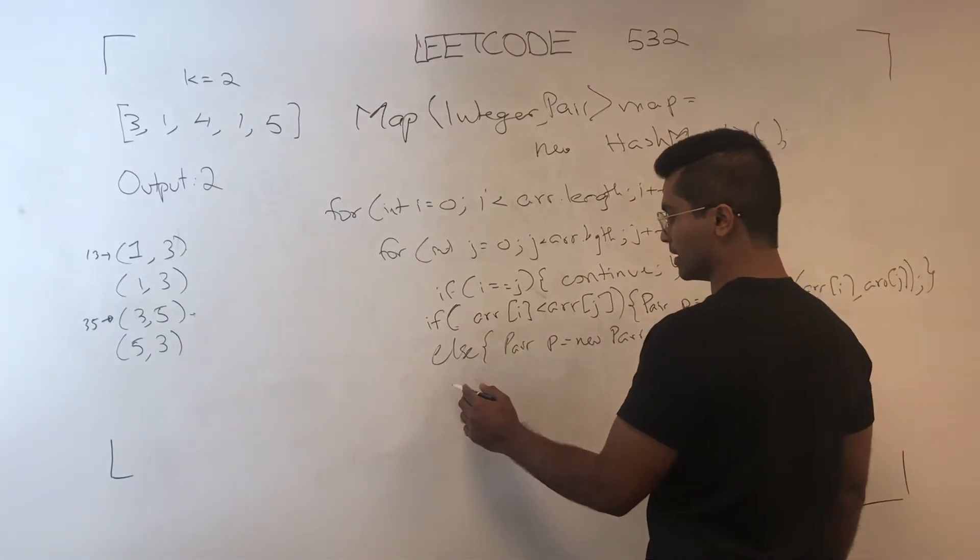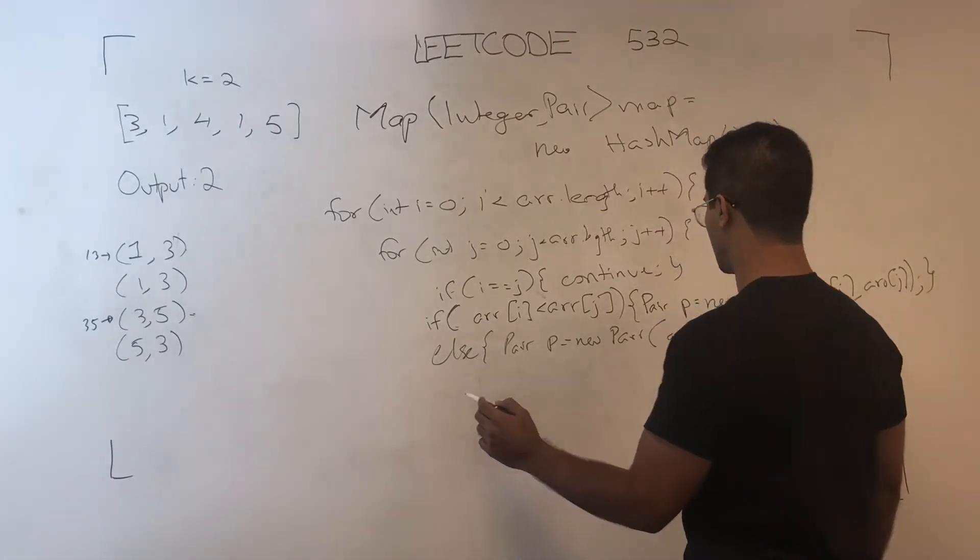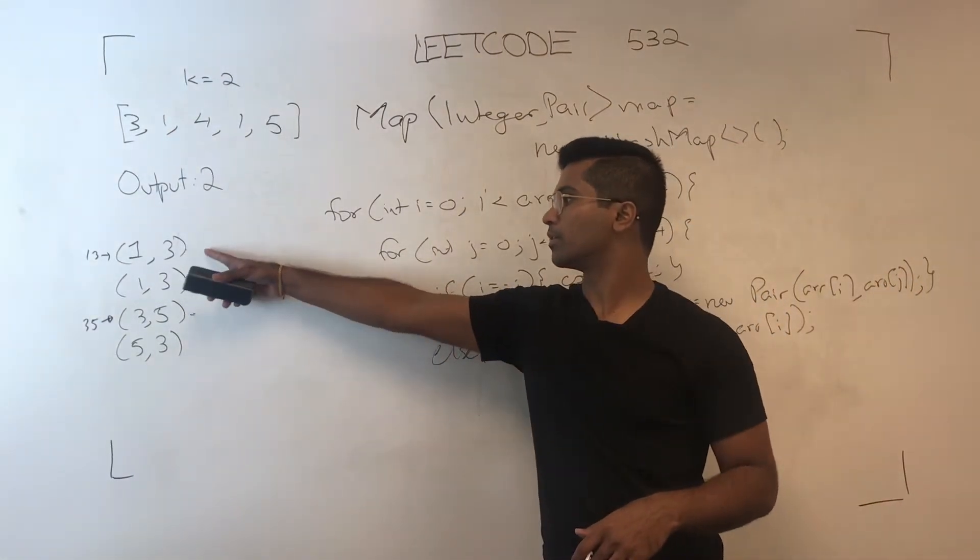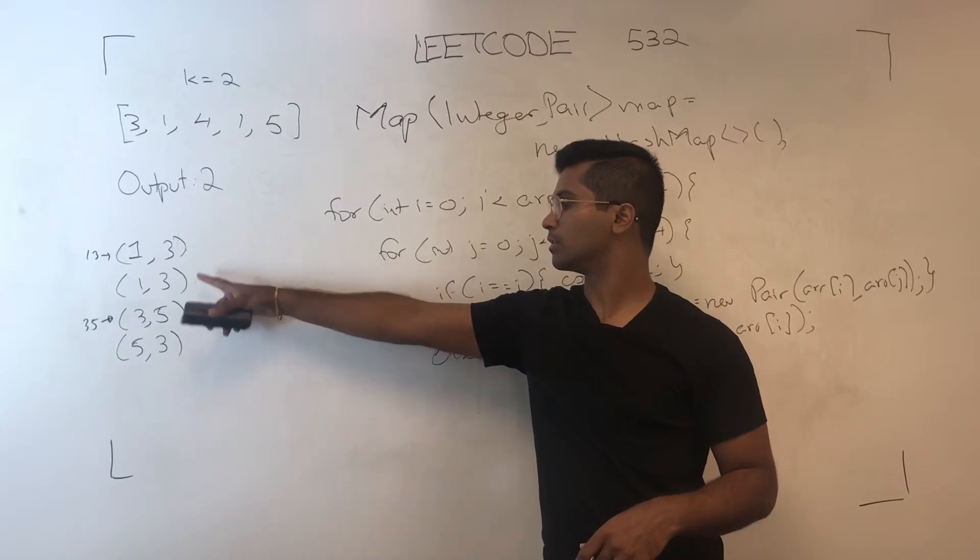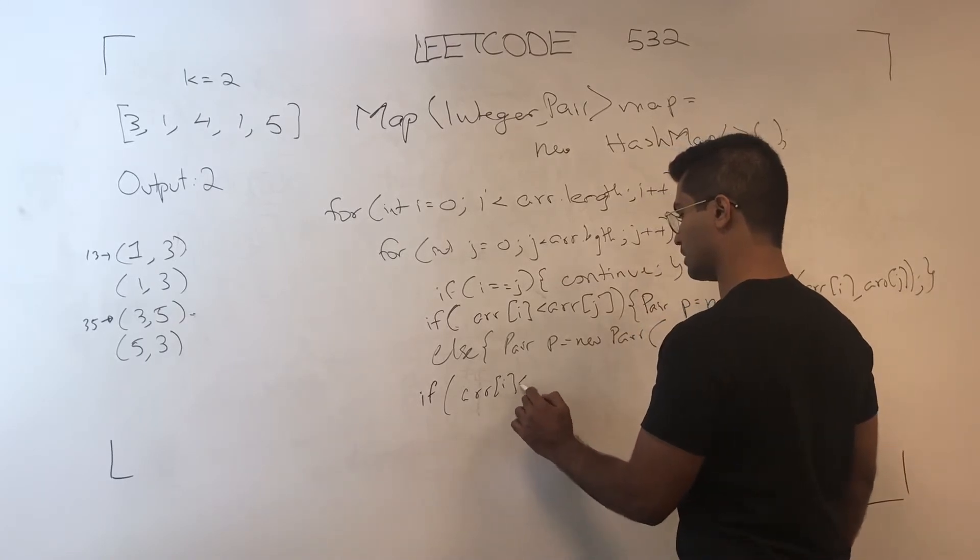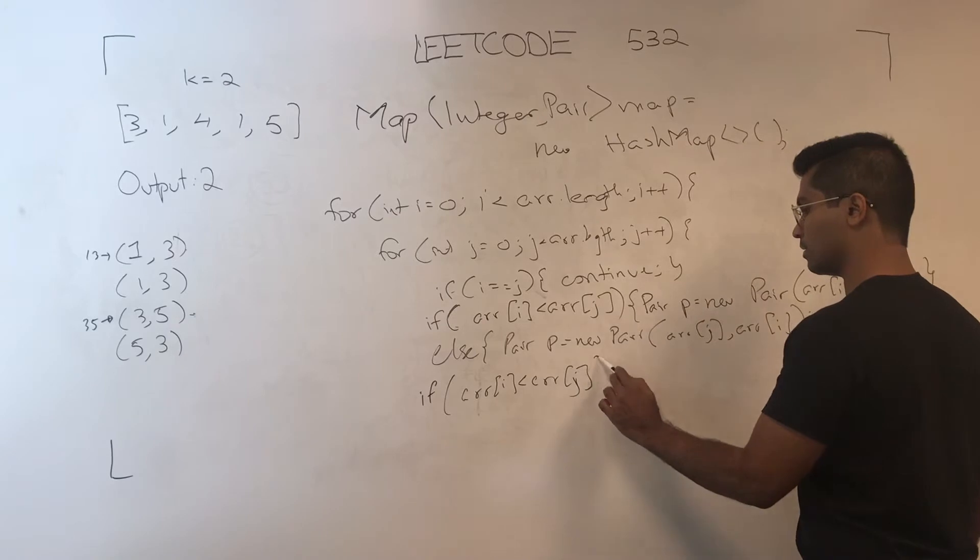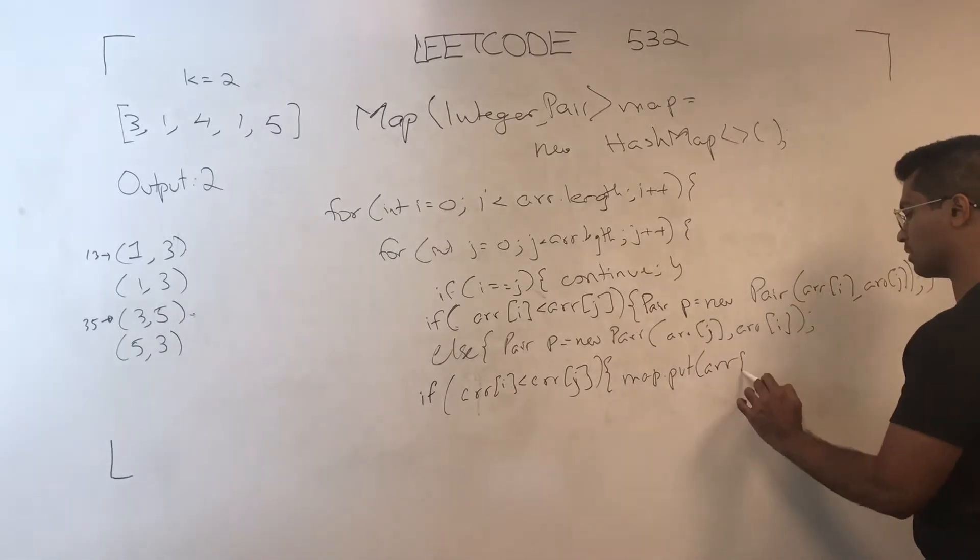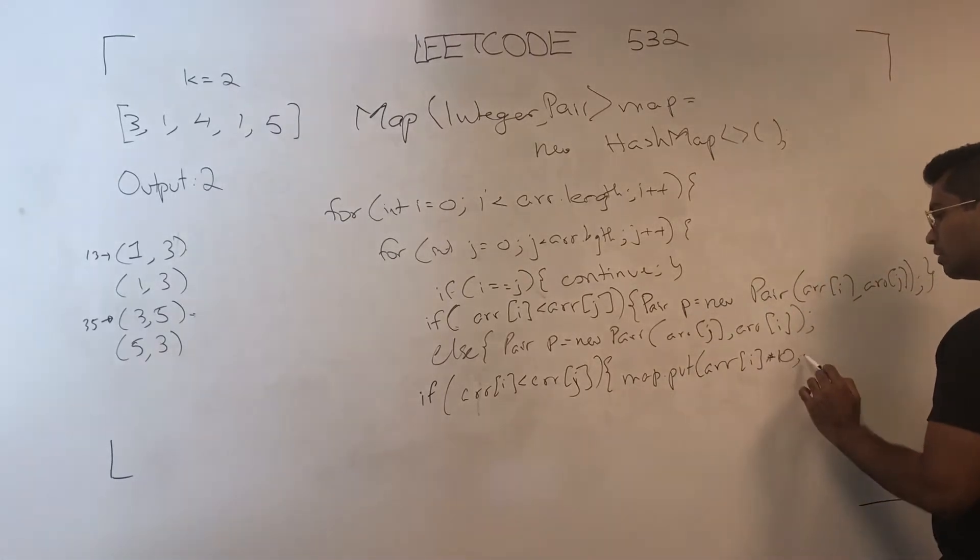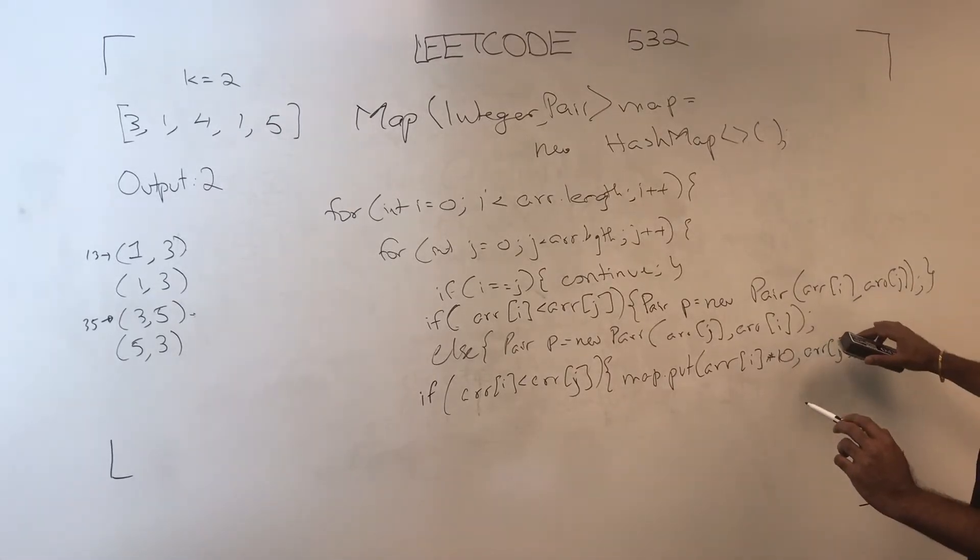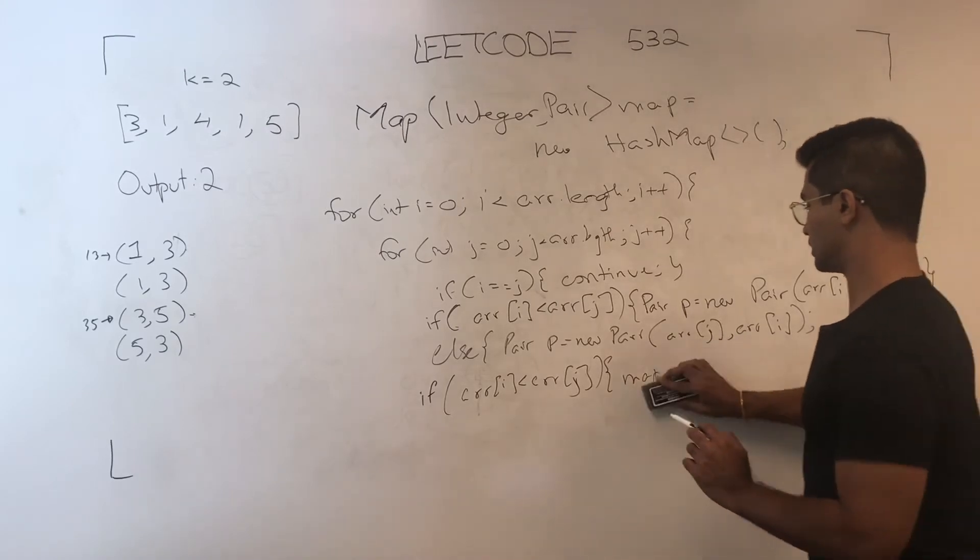Then we make sure that once that pair is created, so 13 and 35, if array of I is less than array of J, then map put array of I times 10 plus array of J comma. Okay, this actually needs to go in here. So we put that in there.